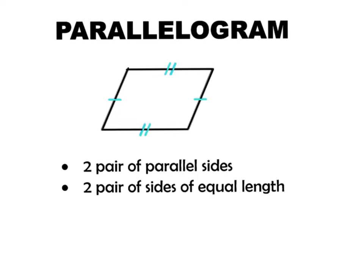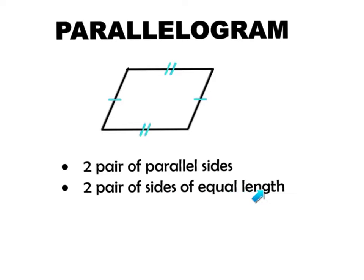The second type of quadrilateral is called a parallelogram. A parallelogram has two pairs of parallel sides — write that down — and it also has two pairs of sides of equal length. The markings shown here indicate that these two sides are parallel and of equal length, and the two horizontal lines are also parallel and of equal length. Therefore, this qualifies as a parallelogram. Please make sure you have these two notes written down and sketch out an example.